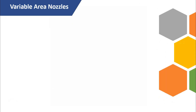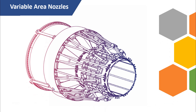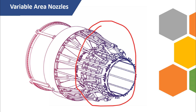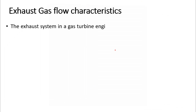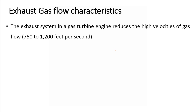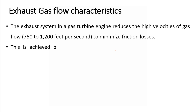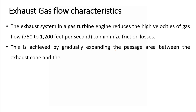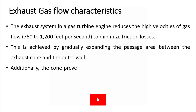Some gas turbine engines employ variable area exhaust nozzles. These nozzles have the remarkable ability to adjust the size of the exit area according to the engine's operating conditions, enabling the engine to operate more efficiently across a broader range of speeds and altitudes. Gas from the engine turbine enters the exhaust system at velocities ranging from 750 to 1,200 feet per second. However, such high velocities lead to significant friction losses. To counteract this, the speed of flow is decreased by diffusion, achieved by creating an increasing passage area between the exhaust cone and the outer wall.